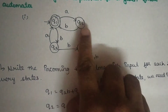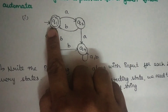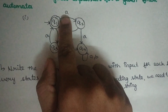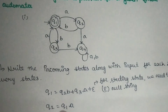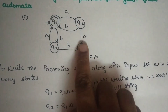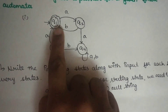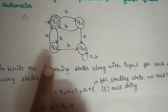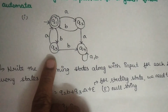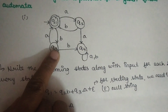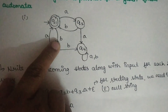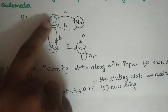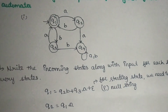Q2 is a state — the incoming states are Q1 with input A. So Q1 into A is Q2. When looking at incoming states, Q3 is a state — Q1 is in the incoming state with input B, and Q3 is also in that state.